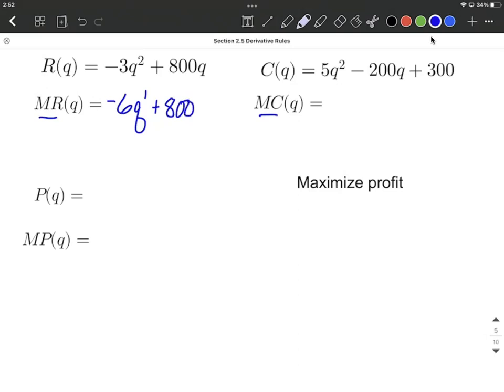Next up, our marginal cost, very similar, we're going to reuse our power rule. So exponent comes down, gets multiplied by the 5, so we get 10q to the first power as we reduce the exponent by 1. The linear term is going to just be that number in front, the coefficient. And then at the end, we have that 300, the derivative of a constant is always going to be 0.